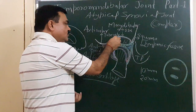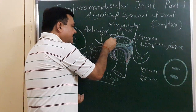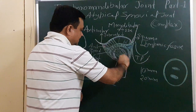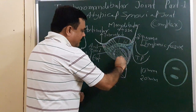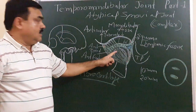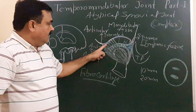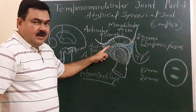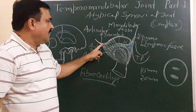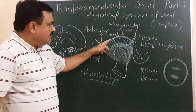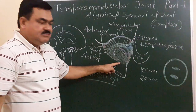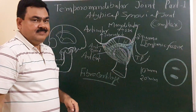The capsule is reinforced by a ligament known as the lateral temporomandibular ligament. It is superiorly attached with the anterior margin of the mandibular fossa and articular tubercle, and inferiorly attached with the neck of the mandible.